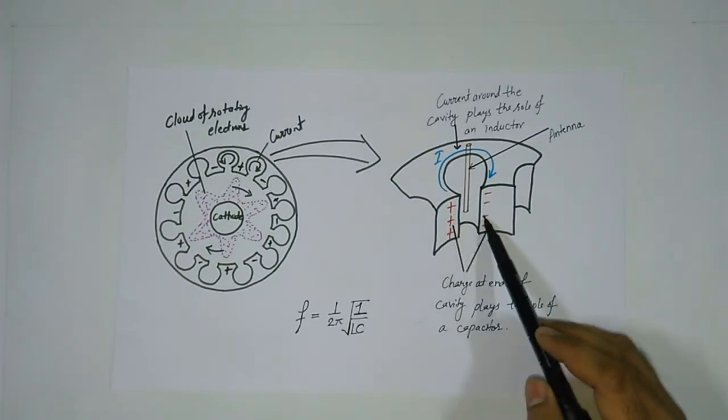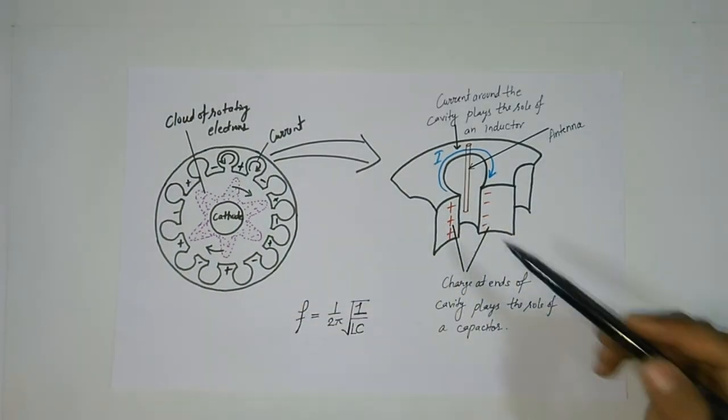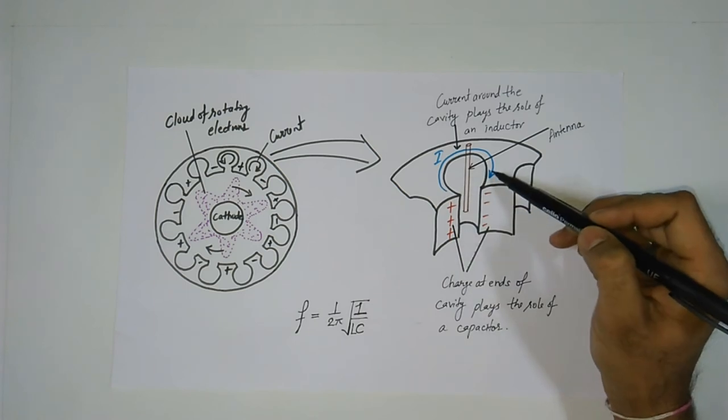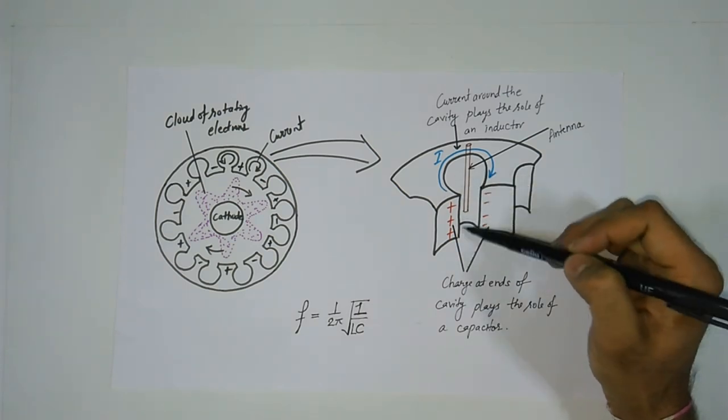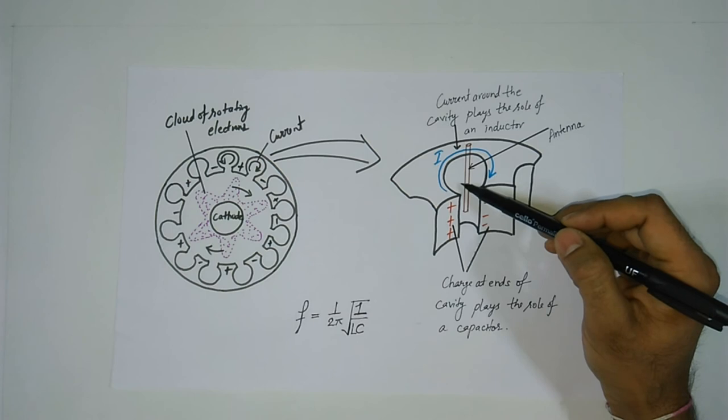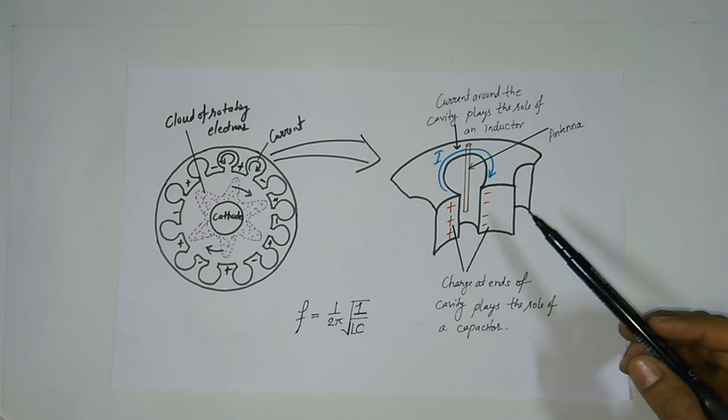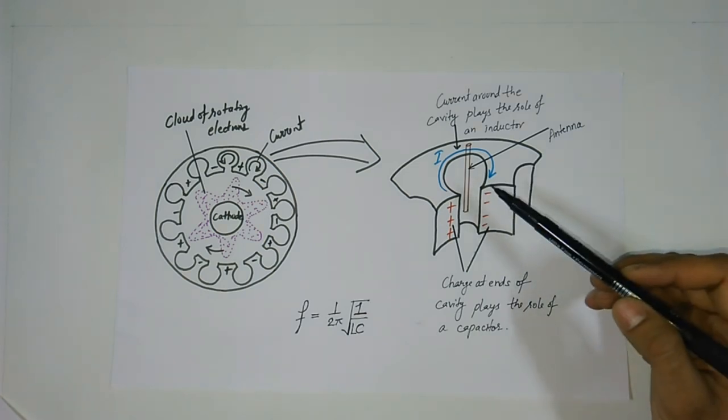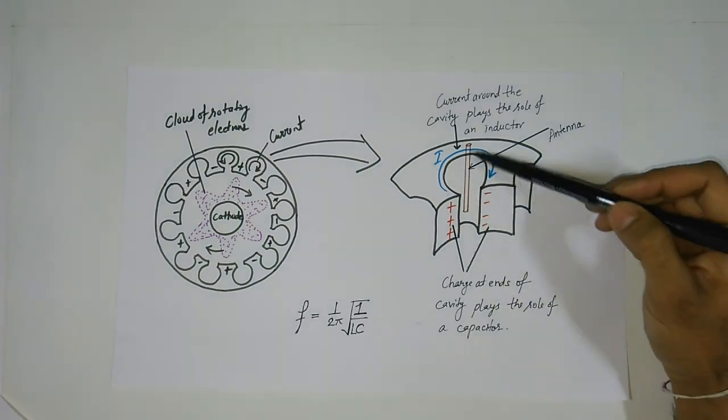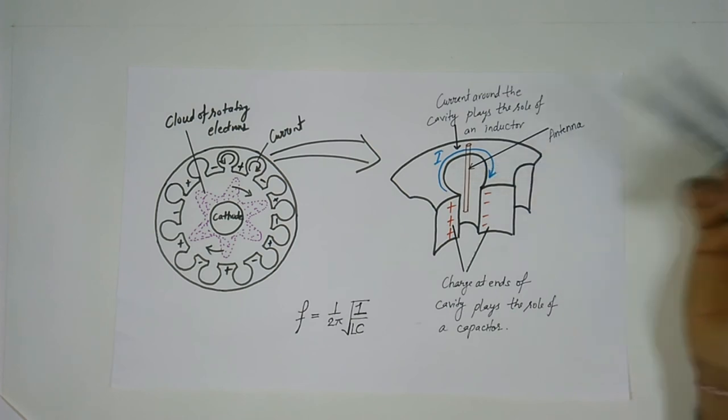These induced charges are equivalent to a capacitor and this alternating current is equivalent to an inductor. So this resonant cavity is actually equivalent to a parallel LC circuit. The oscillations of charges create an alternating current within the resonant cavity of the anode block. This current is carried by the antenna and released as microwave radiations.